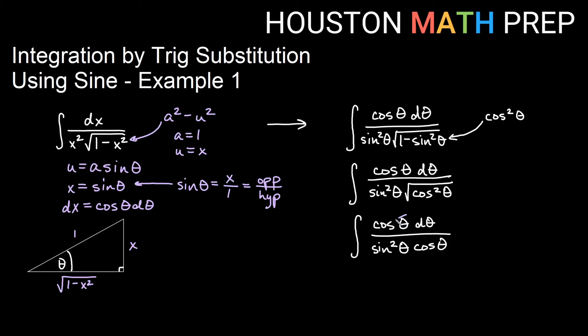Okay, we can then reduce cosine theta over cosine theta. That just becomes 1. And so we get the integral of dtheta over sine squared theta.